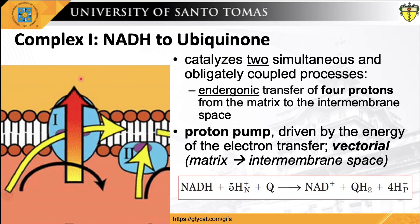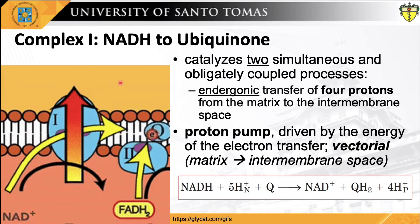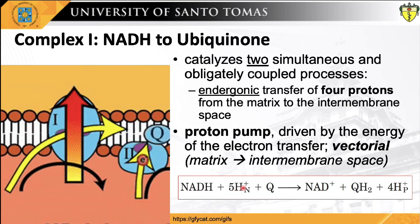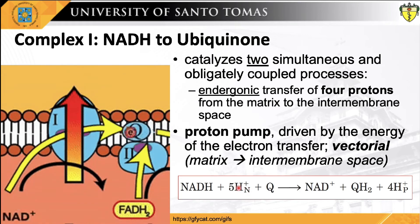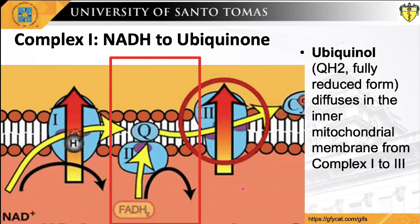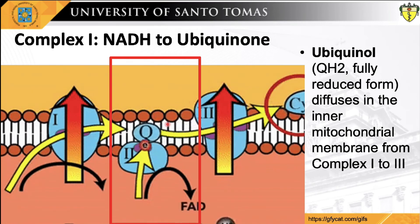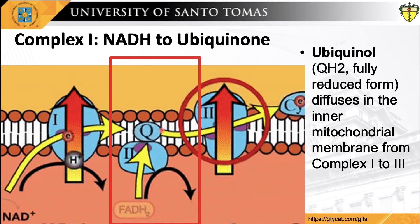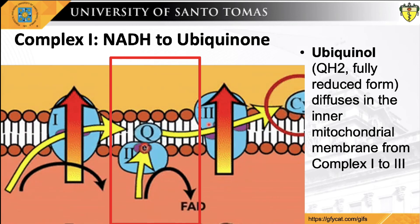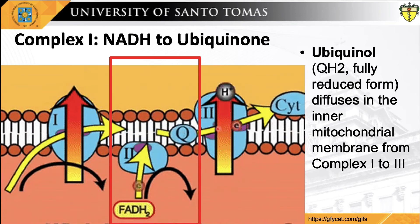As a consequence, the matrix becomes negatively charged with the departure of protons, while the intermembrane space becomes positive due to the influx of protons. The overall reaction is written with subscripts indicating location: 'P' for the positive side (intermembrane space) and 'N' for the negative side (matrix). Ubiquinol (QH2), the fully reduced form of ubiquinone, then diffuses within the inner mitochondrial membrane from Complex I to Complex III, where it is oxidized back to ubiquinone in a process that also involves outward movement of protons.